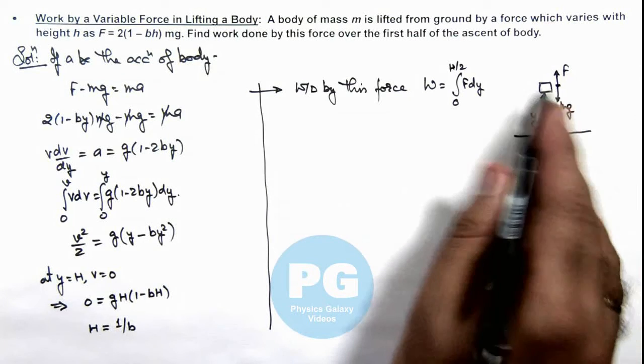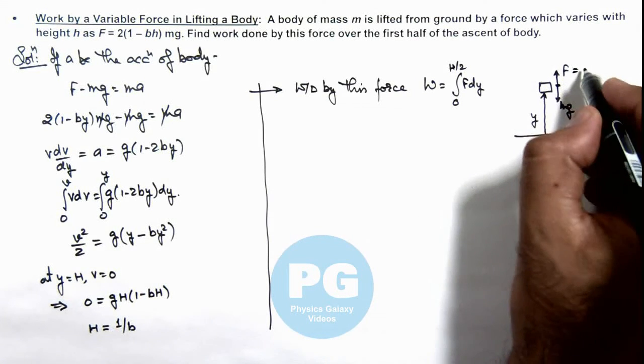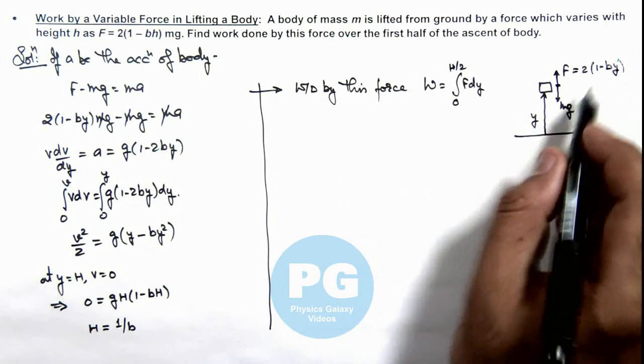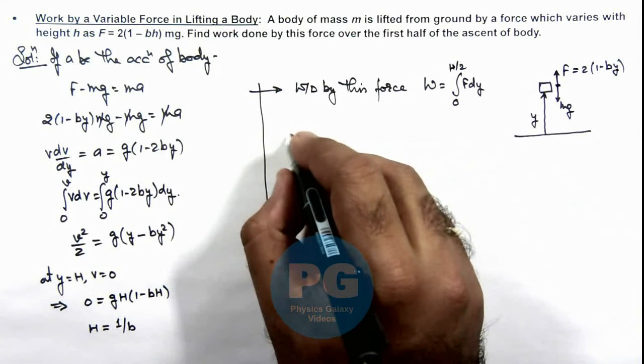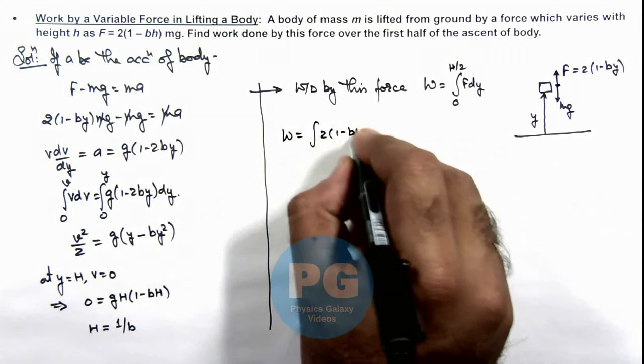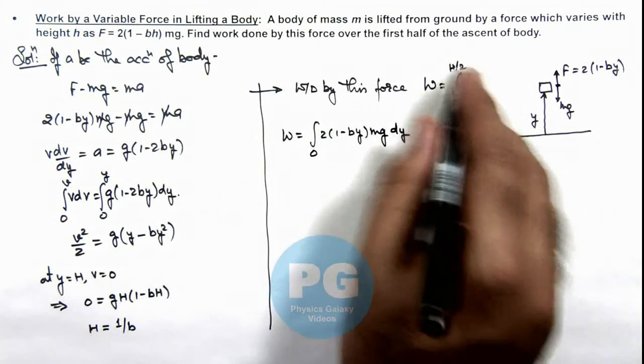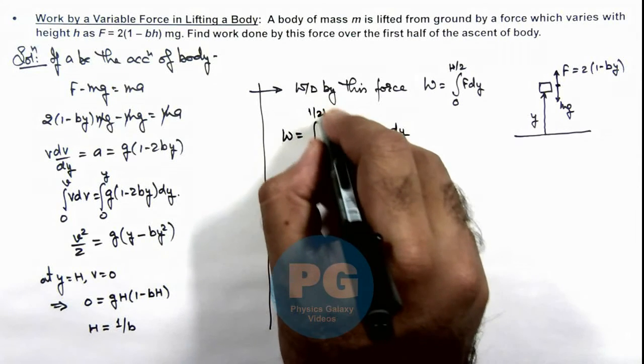So work done by this force as it is varying with distance as 2(1 - by), this is variable so we will use F dy integration. So this work done will be integration of 2(1 - by)mg dy and it is from zero to h/2 where h is 1/b. So we use limit to 1/(2b).